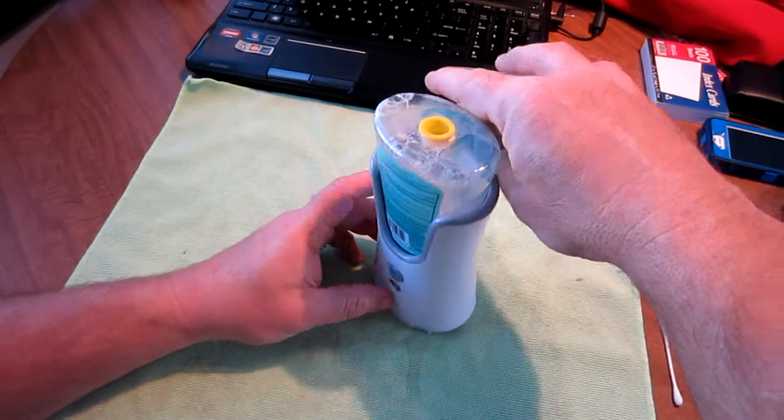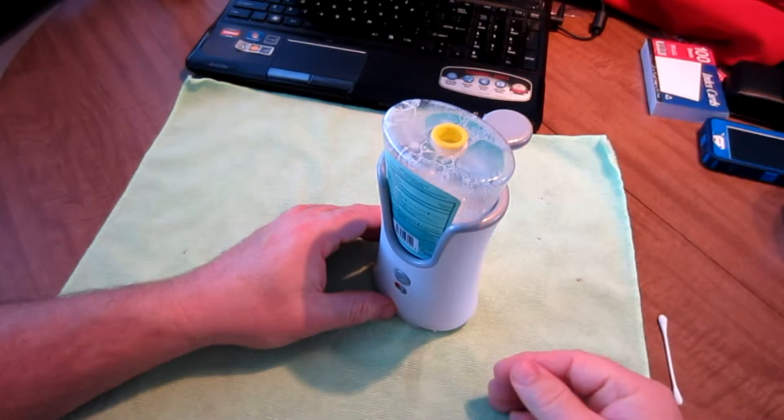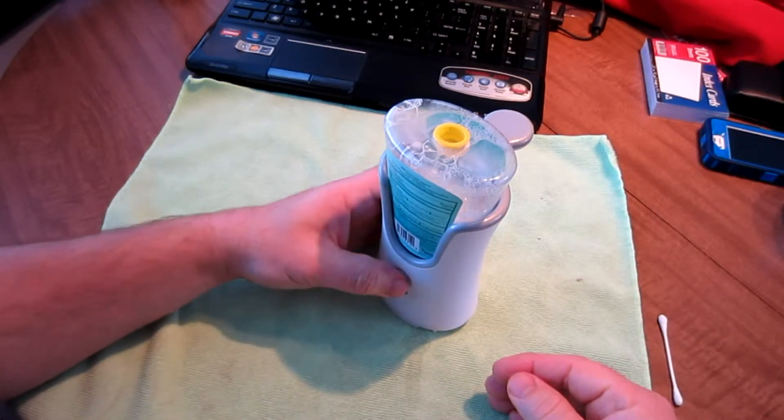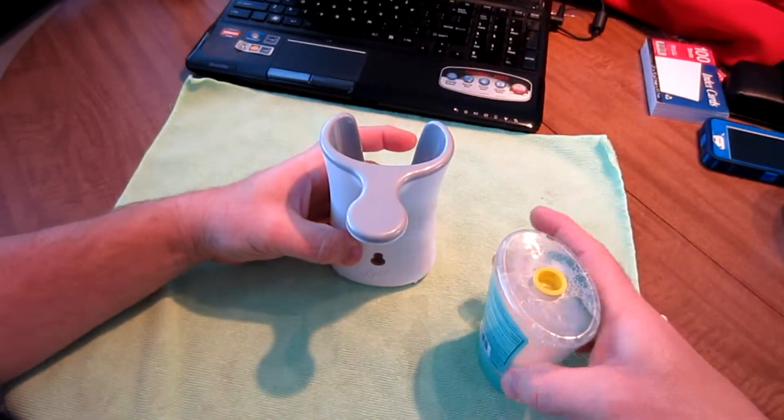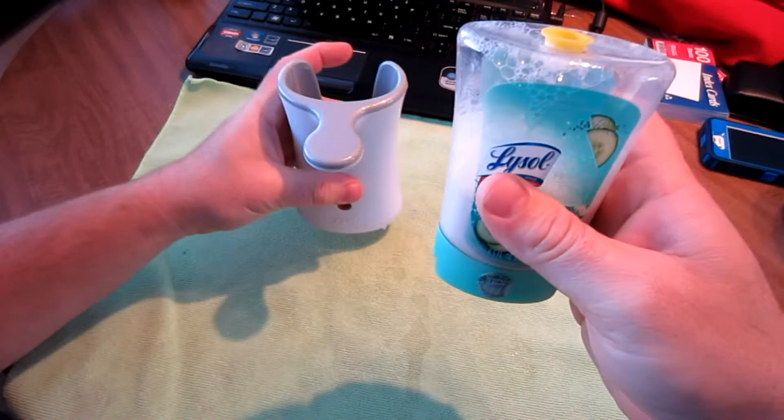So what I've done is, if you look on the back here, once your dispenser is completely empty, there's a button here that you push. This will release it, you'll see there's a little bit of soap residue in there, and then this is what you have, this is the refill.